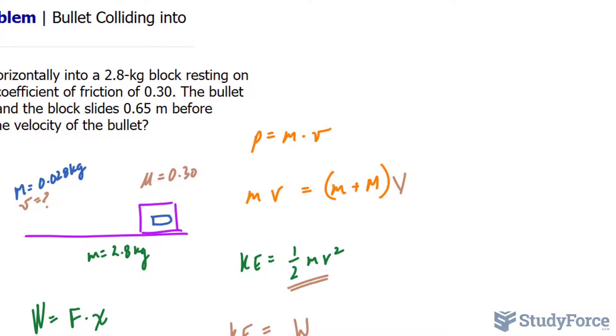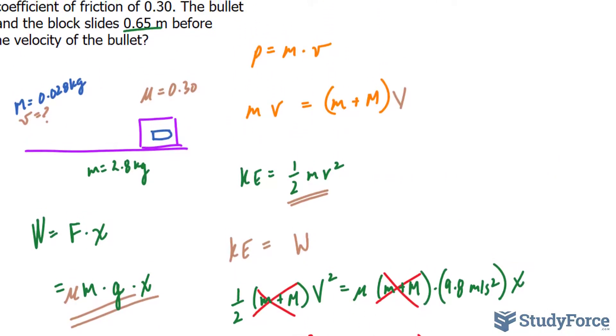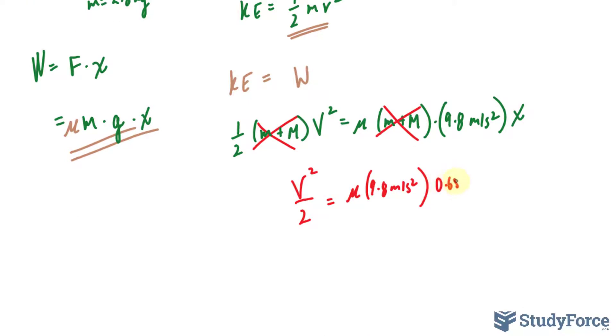And X, remember, we have been given as 0.65, so we will replace that soon. Now, if we were to simplify this equation, you'll notice that m plus M is found on both sides. So you can cancel that out. And simplifying further, we get capital V raised to the power of 2 over 2 is equal to mu times 9.8 meters per second squared. And X can be replaced with 0.65 meters.